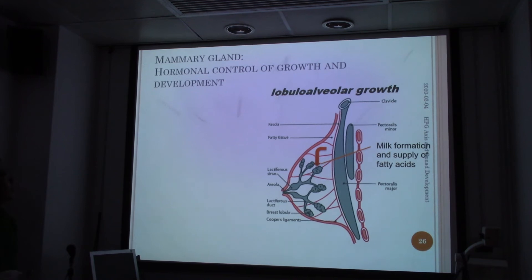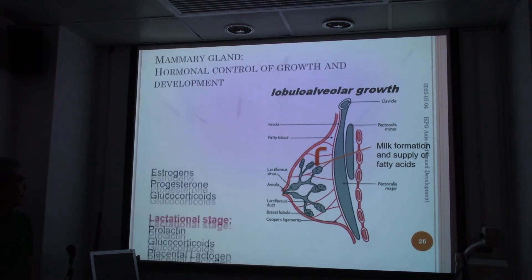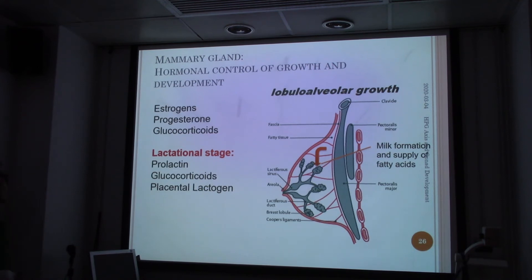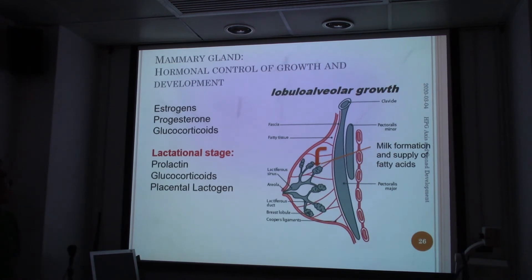Estrogen, progesterone, and glucocorticoids control the formation of the mammary gland structure. But during the lactation stage, we don't need progesterone — we need prolactin, glucocorticoids, and placental lactogen, which comes from the placenta. Oxytocin will then control the release of milk when the infant suckles.